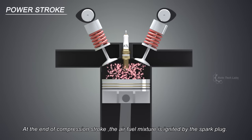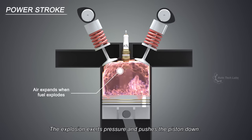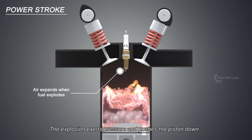At the end of compression stroke, the air fuel mixture is ignited by the spark plug. The explosion exerts pressure and pushes the piston down. This is the power stroke which produces power to the crank.